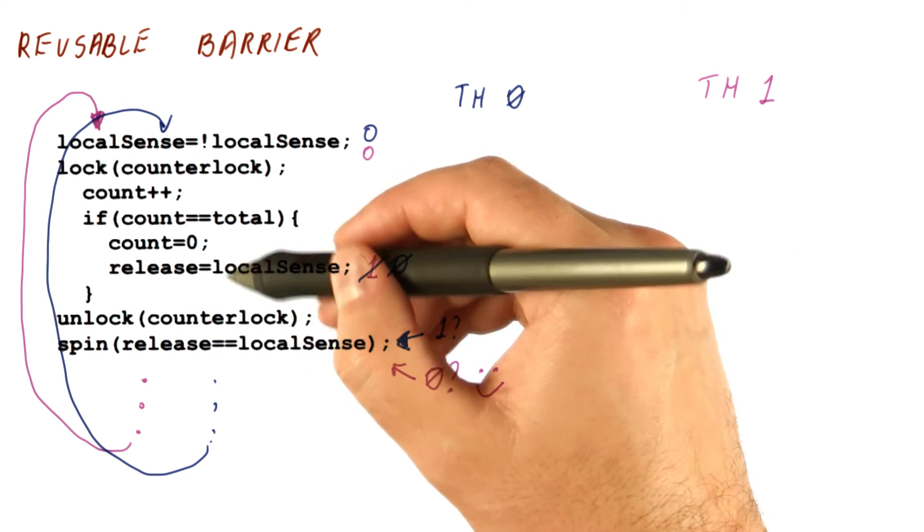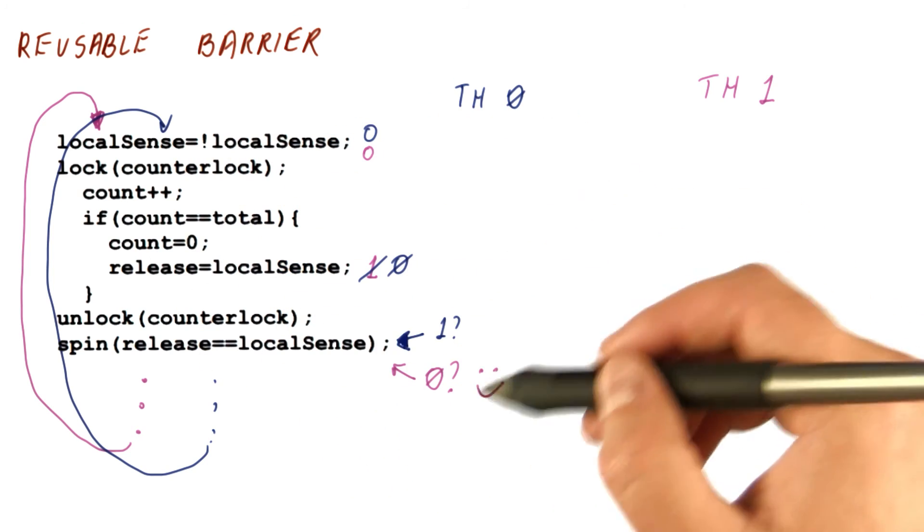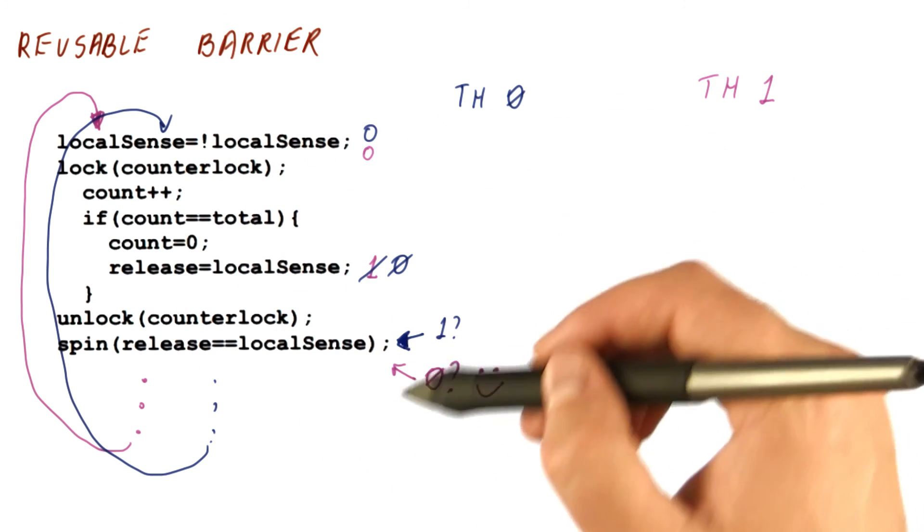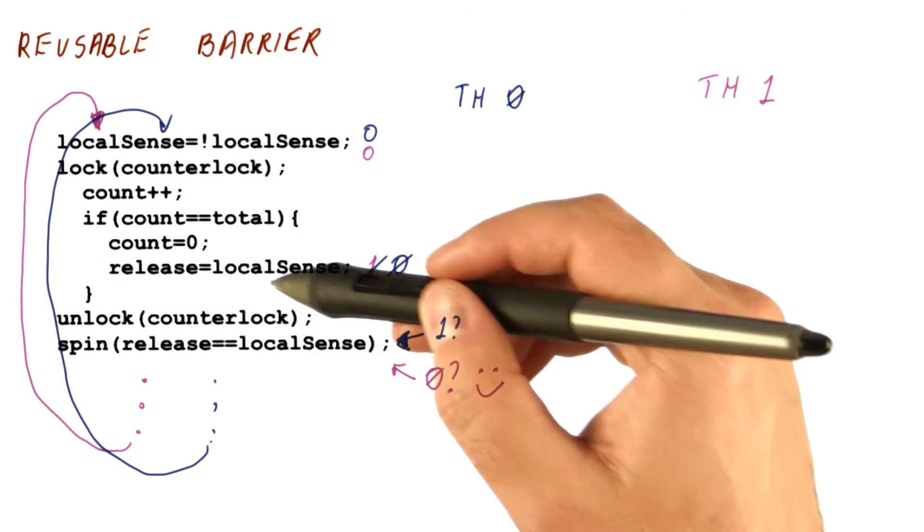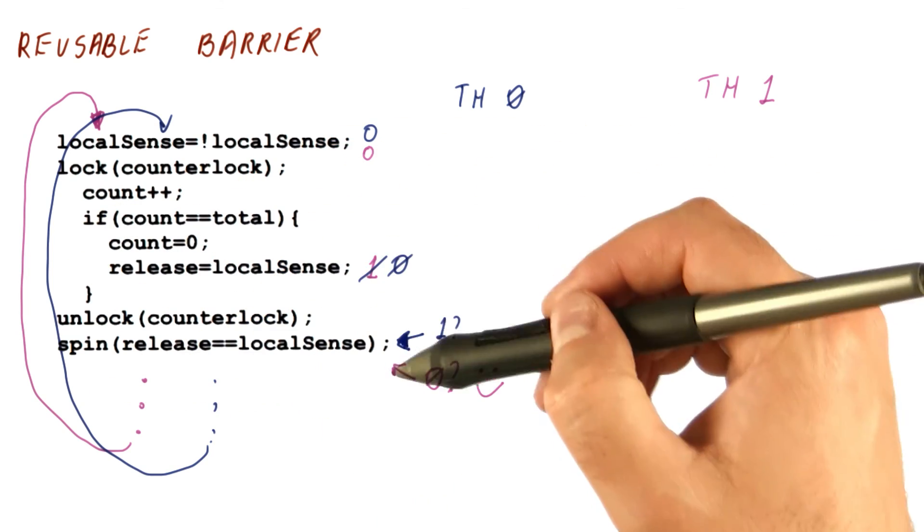So by flipping the value of the release, instead of reinitializing it in each iteration of the loop, we avoid the problem that we had. So this barrier is reusable. We can synchronize on the same barrier over and over without risking deadlock situations.